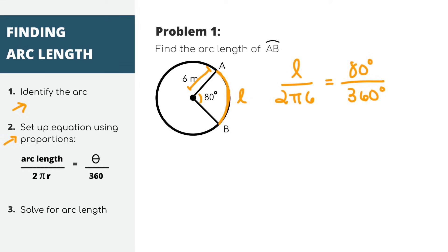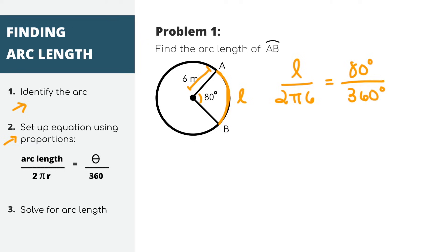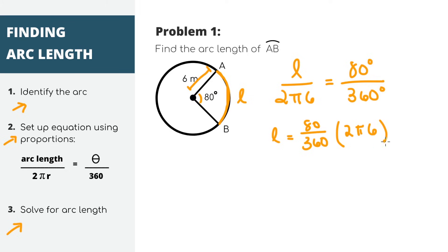In class, you might also see it written in terms of arc length, but it's the same formula, just rearranged. We have all of the numbers we need to solve for our arc length, so solving for L, we'll get the length is about 8.4 meters, which is our answer.